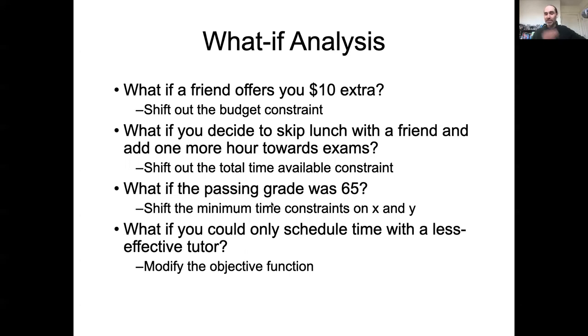If the passing grade went to 65, you would shift the minimum time that you'd have to spend on any particular grade to pass. In this particular case, it should note that, remember, the optimum solution was a 61.71 and a 62 point something in the other. So unless you actually could relax these other constraints, you would end up with no viable solutions.